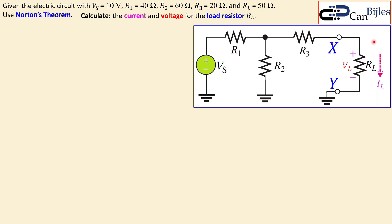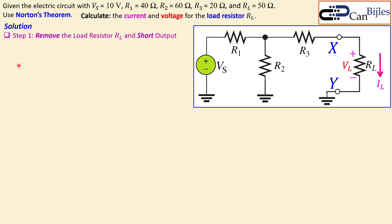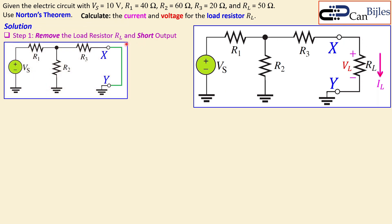We have defined the current direction and voltage VL and IL for the load. Step one is to remove the load, and in Norton's case we short the output — meaning we make a short between nodes X and Y. Step two is to determine the Norton current, which flows from point X to point Y and is called In.